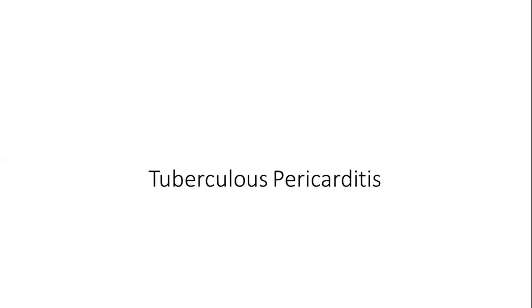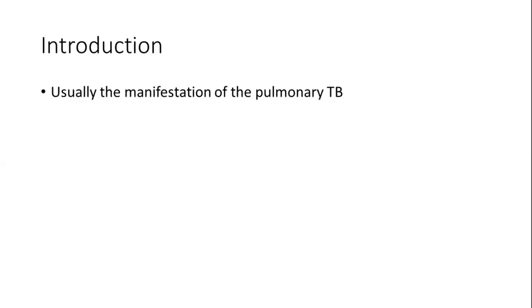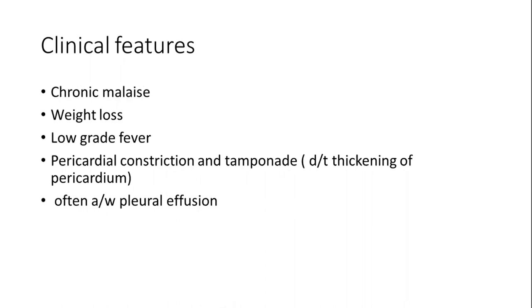The next important topic is tuberculous pericarditis. It is very common in our part of the world, though decreasing in the western world. It usually accompanies pulmonary TB and patients typically present with chronic malaise, weight loss, low-grade fever, and features of pericardial constriction or tamponade. There can also be associated pleural effusion with other respiratory symptoms of pulmonary TB. We should always suspect tuberculosis in a patient presenting with features of pericarditis or pericardial effusion.